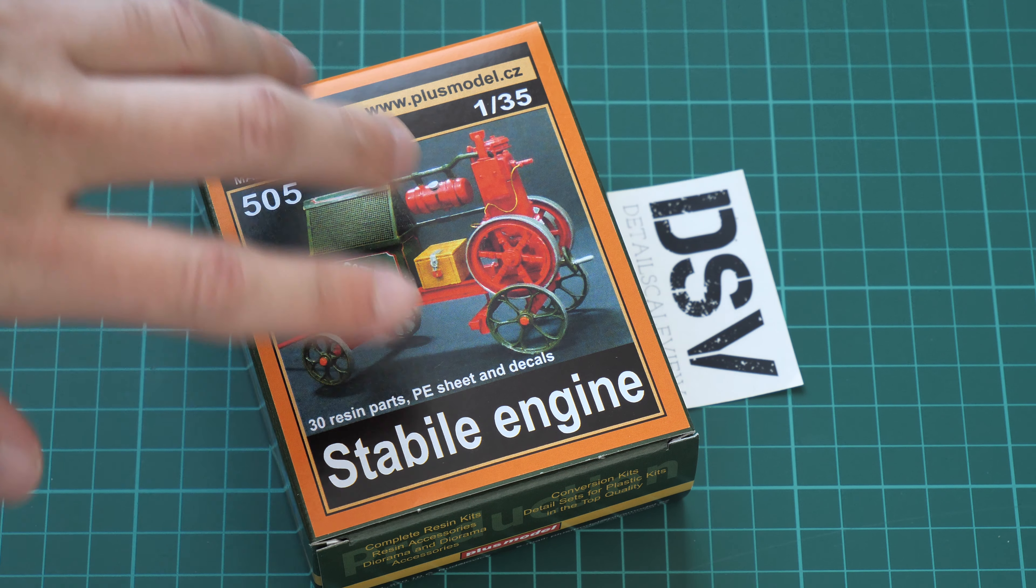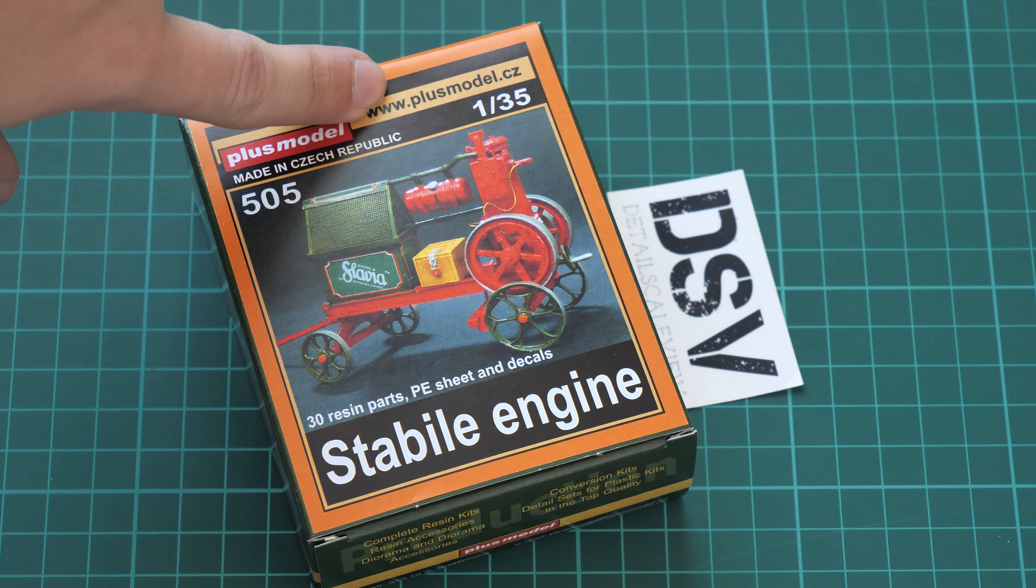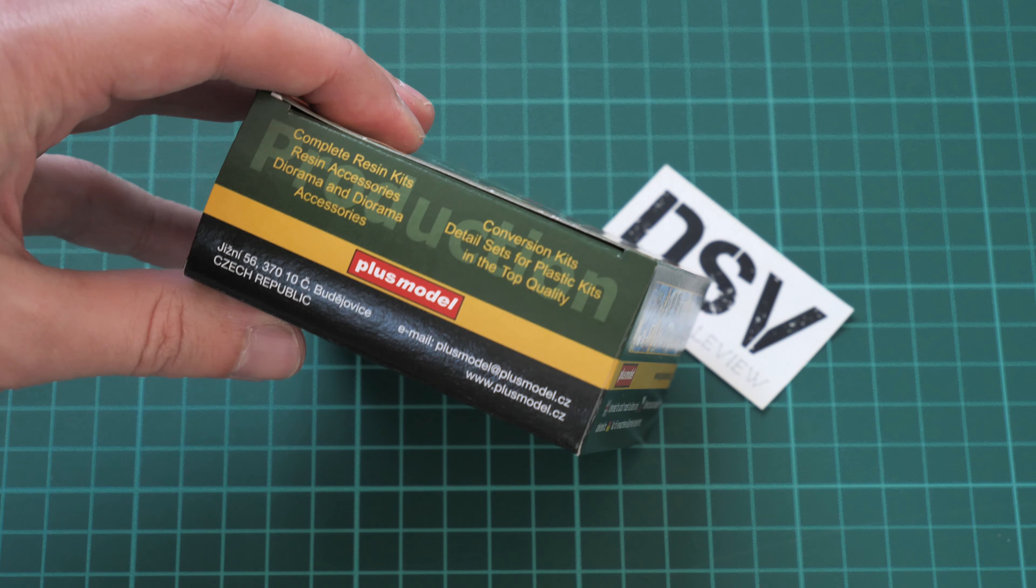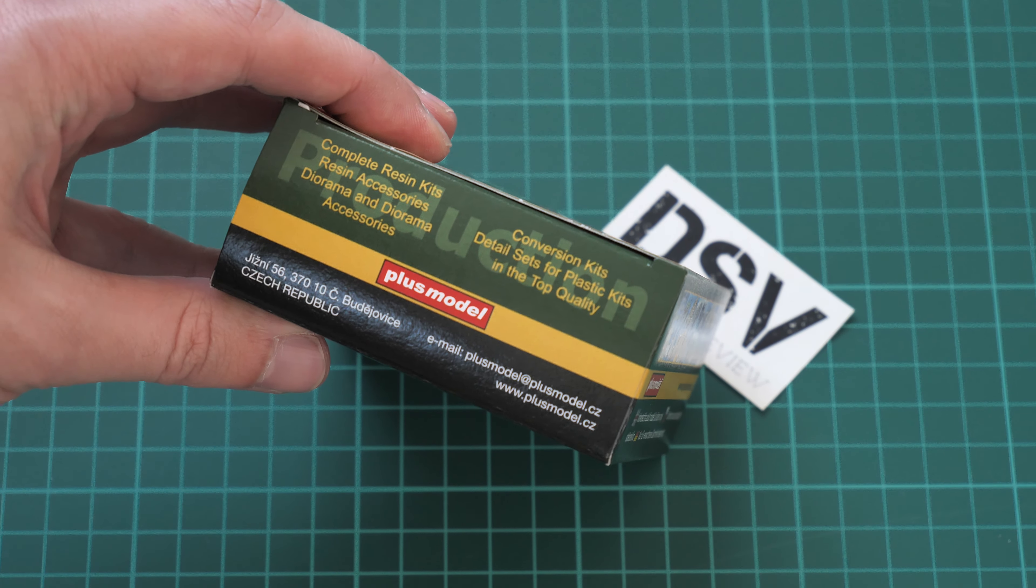Now we're going to check it closer. It's a commercial sample, so you'll get exactly the same kit if you order it from plusmodel.cz. As you can see, it's kit number 505, and the box size is quite typical. Here's a comparison with my hand. We have nice box art of the finished kit in the painted state. On the side you have information about the model and manufacturer.